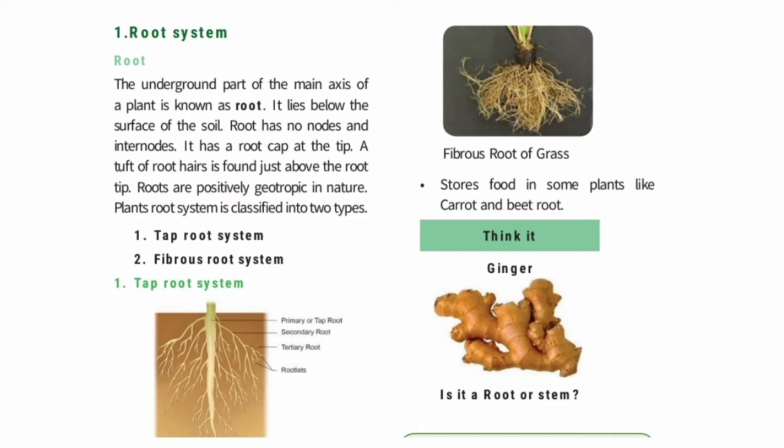The tip of the root is covered by a cap-like structure called the root cap. The fine hair-like structures on the root are called root hairs. Roots are positively geotropic in nature — 'geo' means gravity and 'tropic' means movement, so roots grow towards gravity.